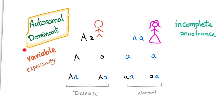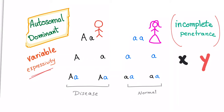Tuberous sclerosis also has variable expressivity. This means not everybody is similar. Person X may have tuberous sclerosis but it's very mild, while person Y also has tuberous sclerosis but it's more severe — more symptoms, more lesions, more tumors. This is called variable expressivity.